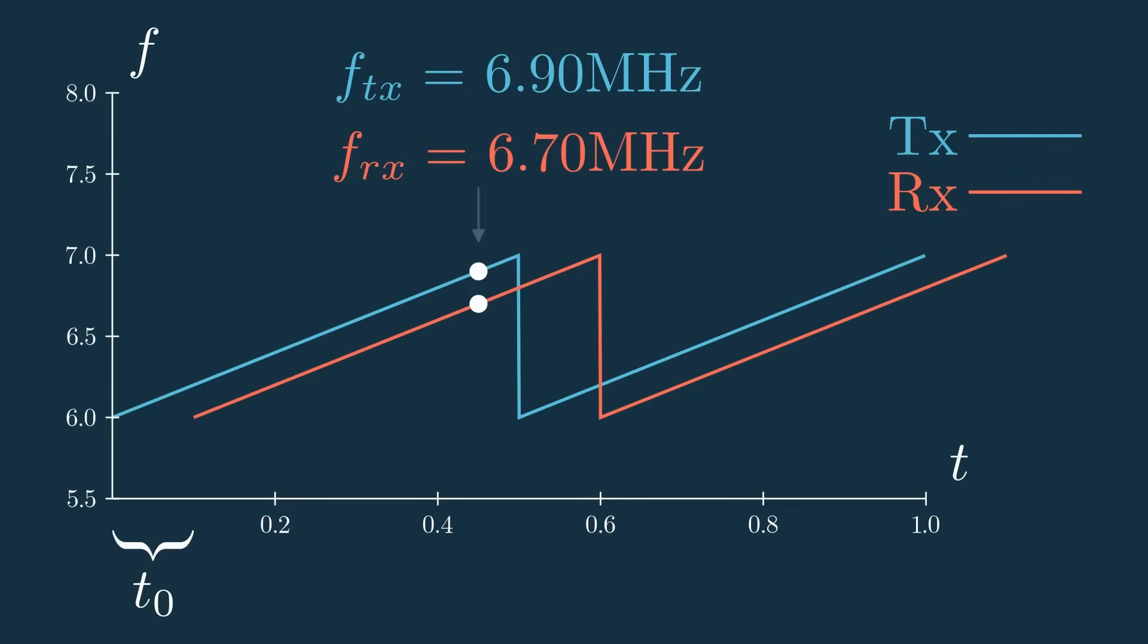Remember, we have these two frequencies, FTX and FRX. The difference between the two, shown in this highlighted section, would be the section of the bandwidth covered while the signal is propagating through the air. This frequency is really important, and you'll see it all the time when using FMCW radar, and it's called the beat frequency, so keep note of that.